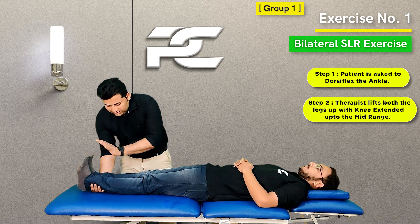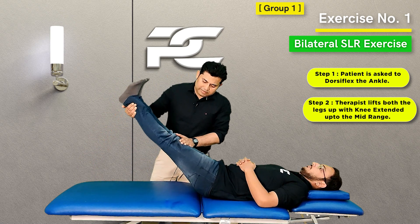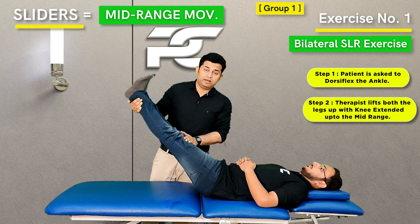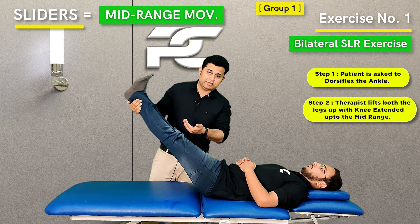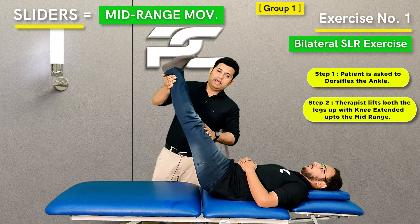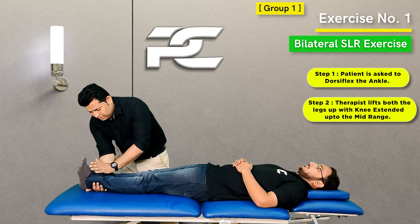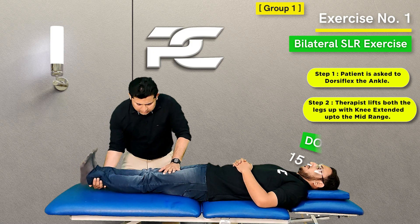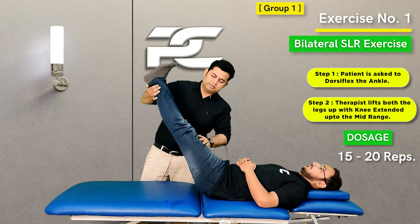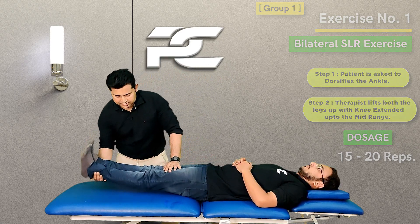While maintaining the ankles in dorsiflexion, the therapist is going to lift both hips up with knees extended only up to the mid-range, because the intention here is to slide the nervous system and not tension it. So the therapist is going to avoid end-range SLR movements. We are going to perform around 15 to 20 such movements.